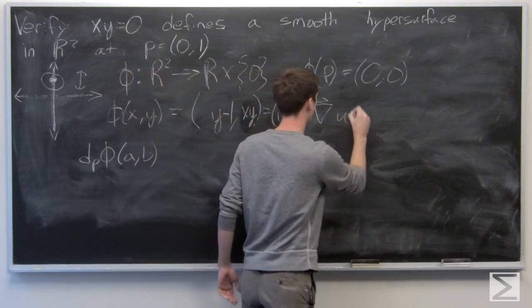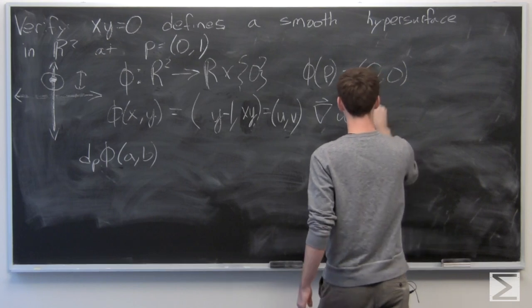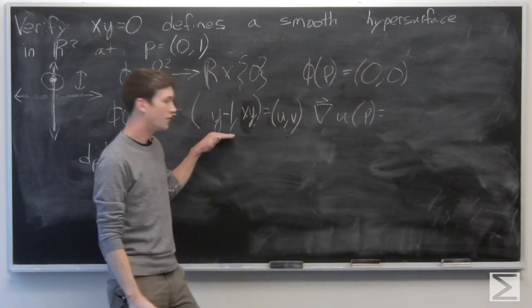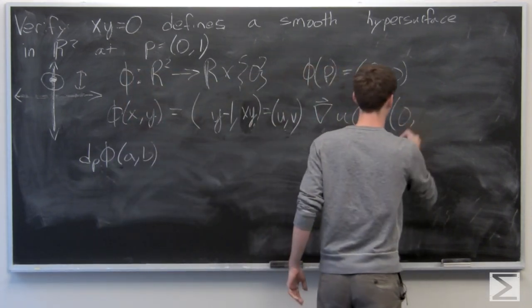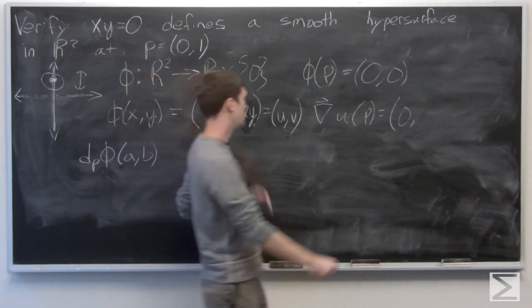So the gradient vector of u at p is going to be the partial derivative of u with respect to x, which is 0, and the partial derivative of u with respect to y, which is 1.